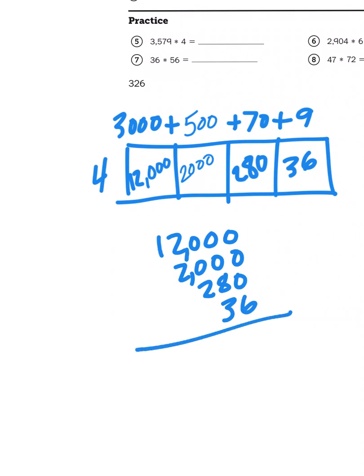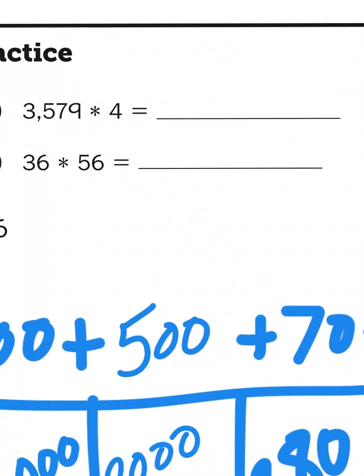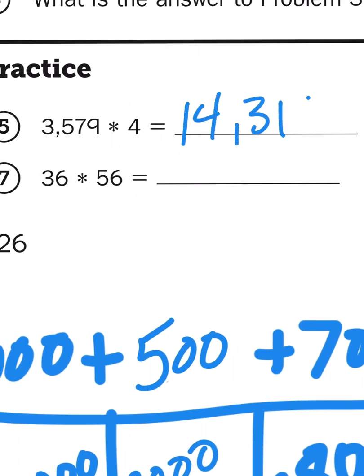So, I'm going to compare all my partial products and I'm going to add them together. It's going to give me my new complete product, which is 14,316.